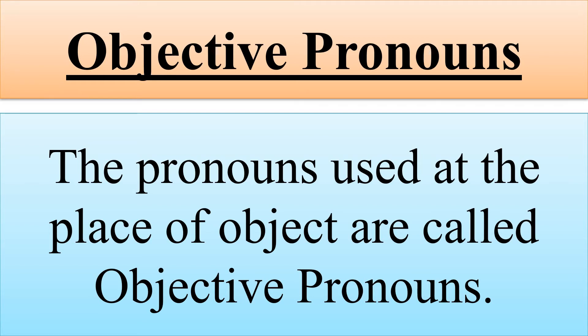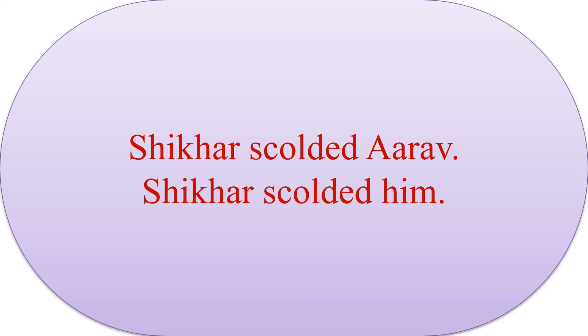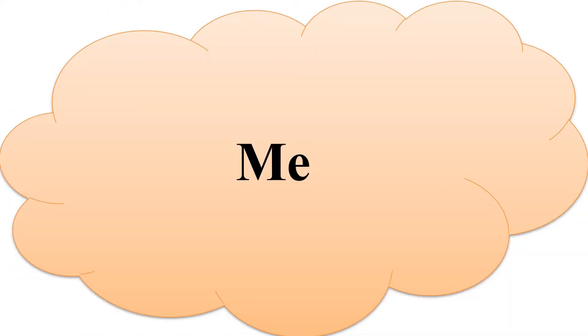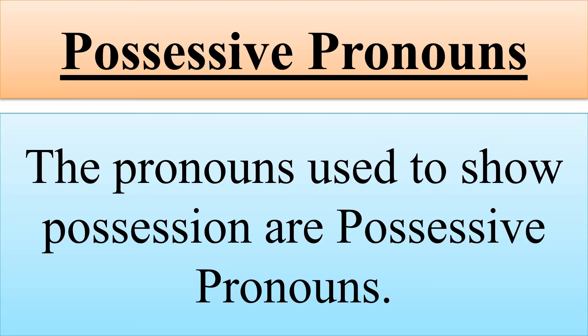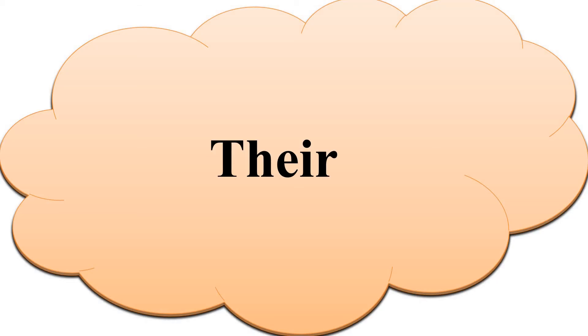Now come to the objective pronouns. The pronouns used at the place of object are called objective pronouns. For example, Shikhar is calling Arav. Shikhar is calling him. 'Arav' is used at the place of object and 'him' replaces it. 'Him' is used here as the object pronoun. The words me, us, you, him, her, it, them are used at the place of object.